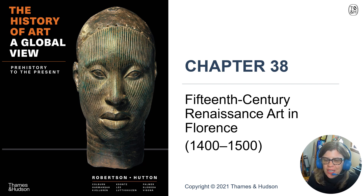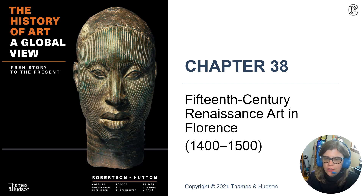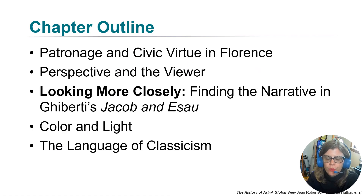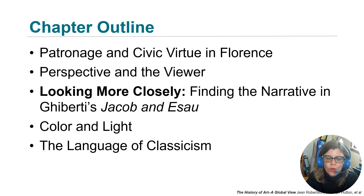Hello and welcome to your first chapter. We will spend the next few chapters on the Renaissance, which begins in Italy. We're going to talk specifically about Florence and that very first century of the Renaissance. We're going to look briefly at patronage and civic virtue, perspective and the viewer. I'm going to challenge you to look at your text and find out more about Ghiberti's Jacob and Esau — just because I don't cover it doesn't mean it won't be on the exam. We're going to talk about color and light and the language of classicism.